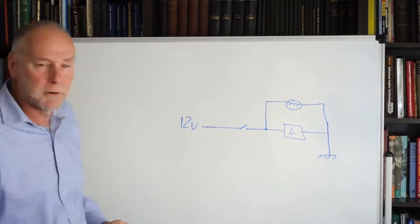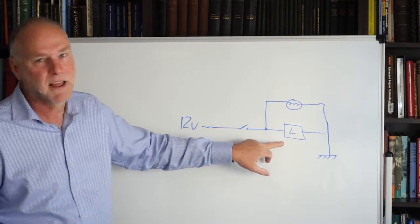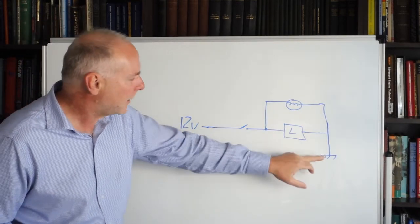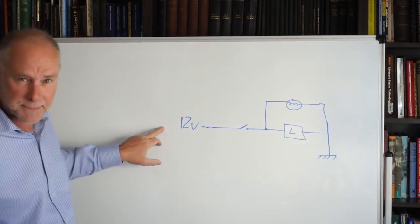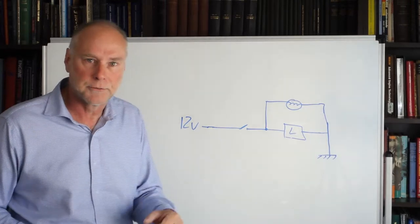Up on the whiteboard I've got a simple circuit. 12 volts here, supplied through a switch to a load, that load could be a pump or a fan, back to ground and then ground takes us back to the negative side of the terminal so we have a complete circuit. When that switch is closed, the load runs.